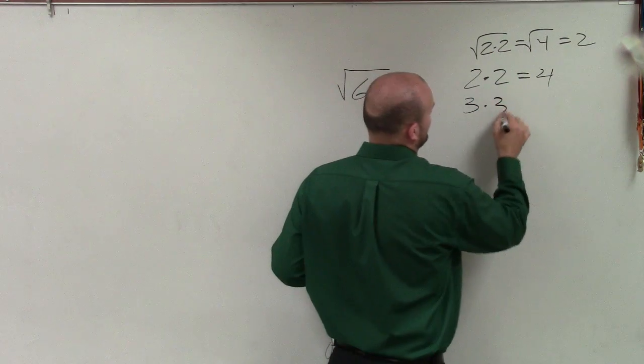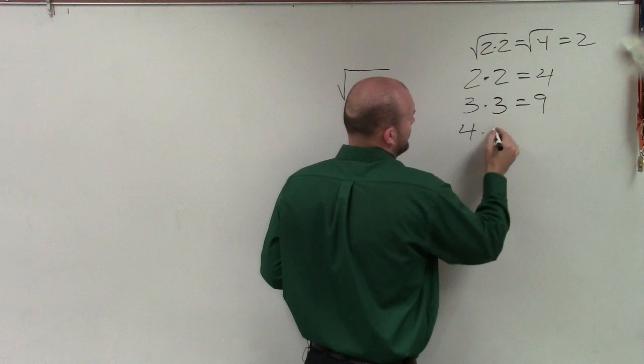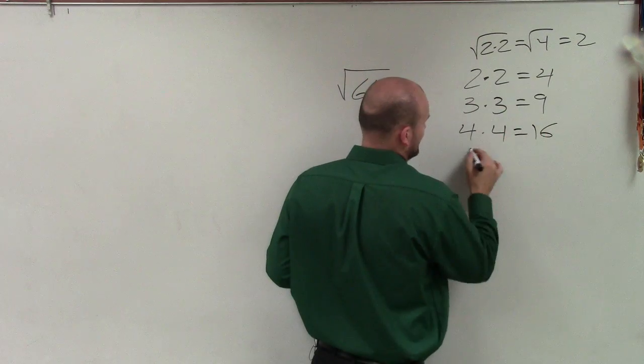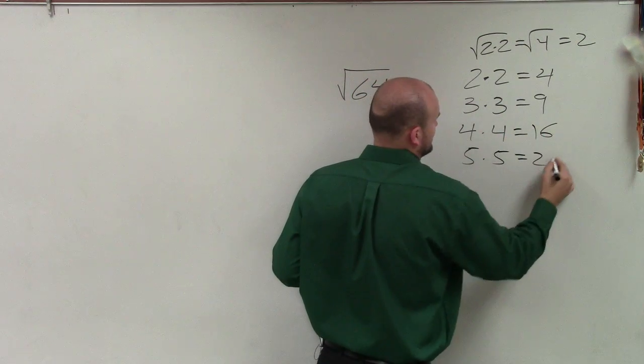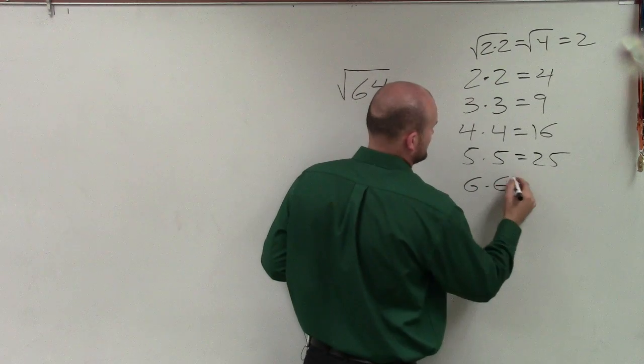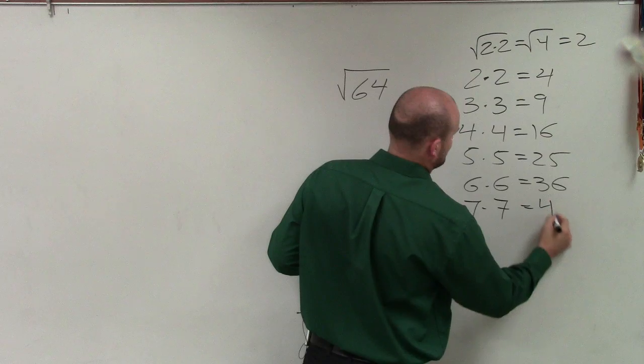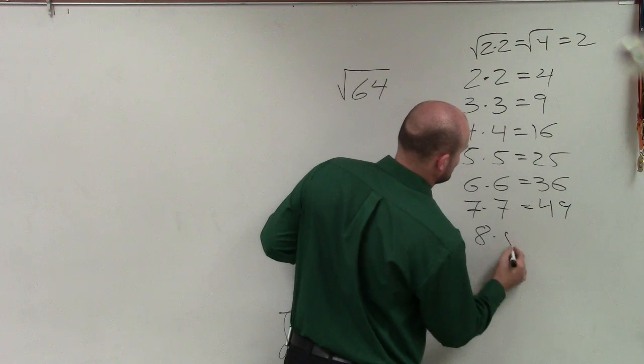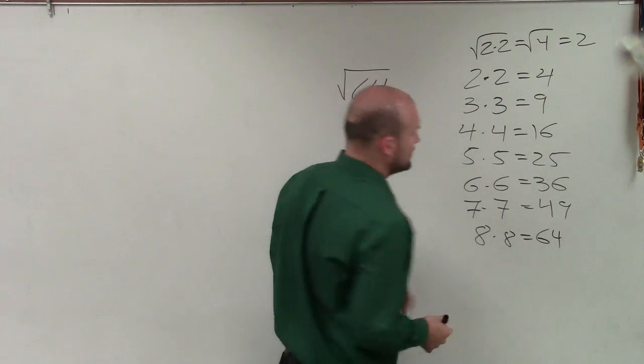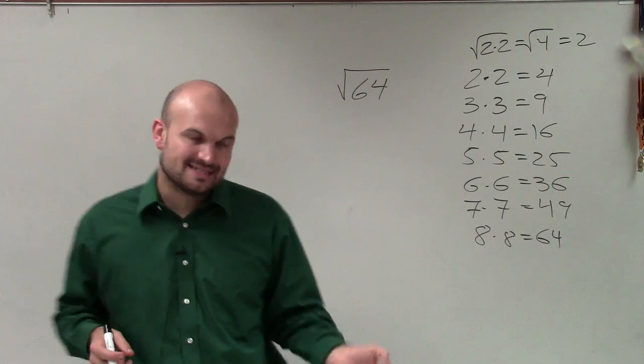3 times 3 equals 9. 4 times 4 equals 16. 5 times 5 equals 25. 6 times 6 equals 36. 7 times 7 equals 49. 8 times 8 equals 64. So since 8 times 8 equals 64,